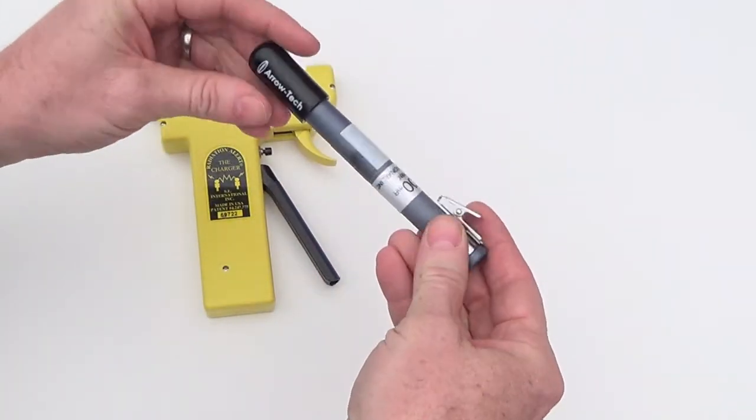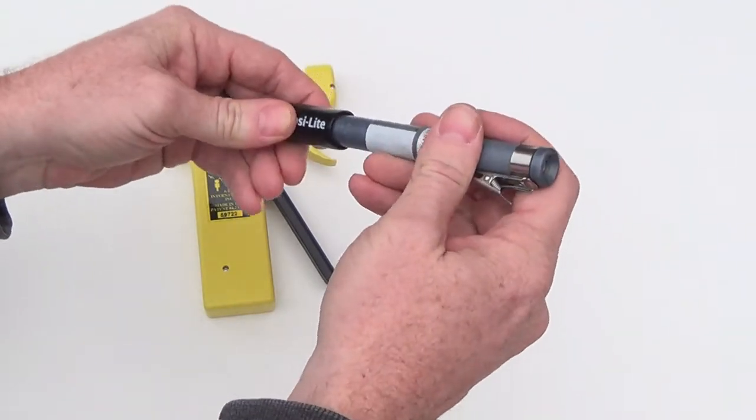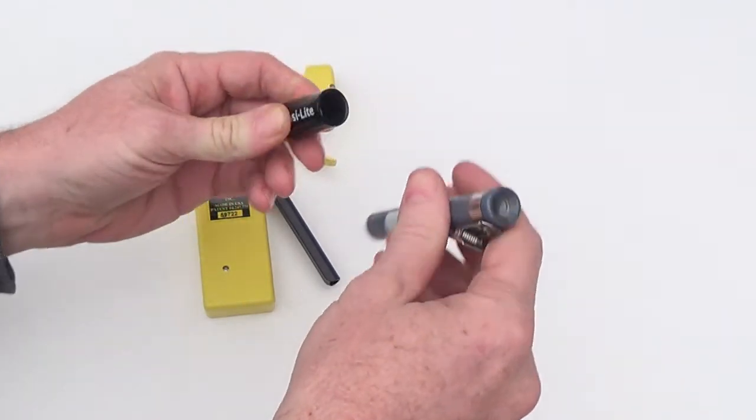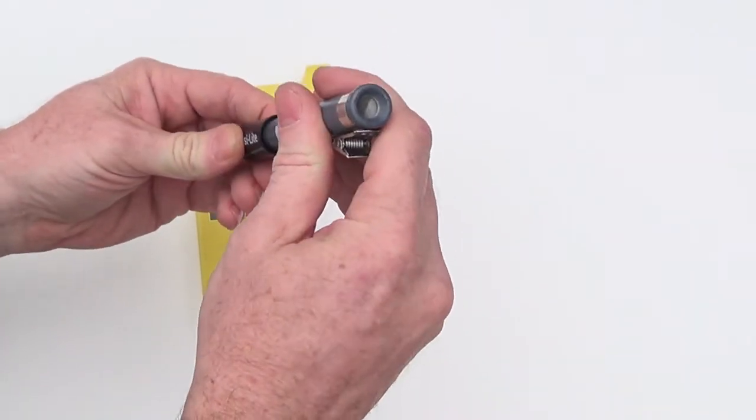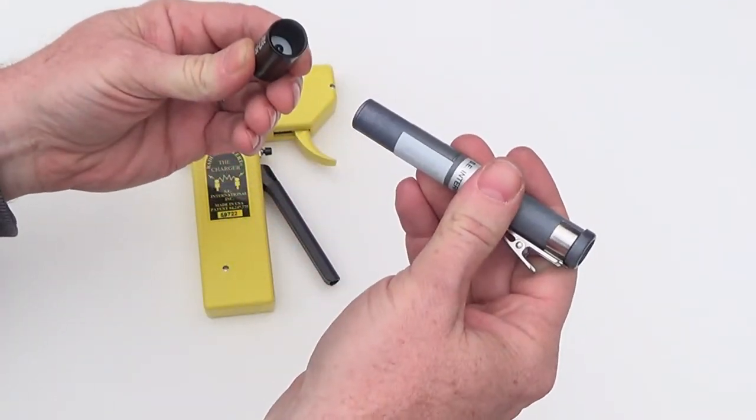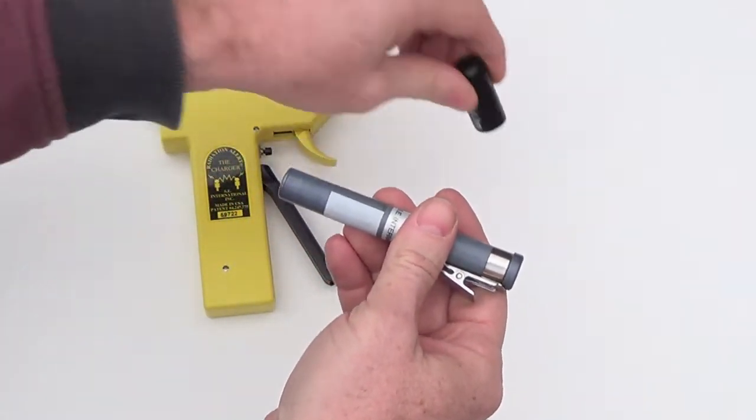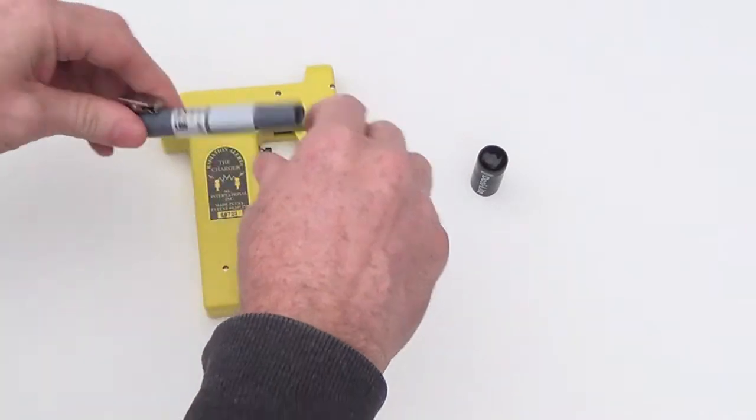We have one here with the Aerotec Dosey light. The Dosey light is a little end cap light that helps users see the readings of their pen dosimeter through the end window of the pen. Be sure to remove that from the pen dosimeter before engaging it into the charger.